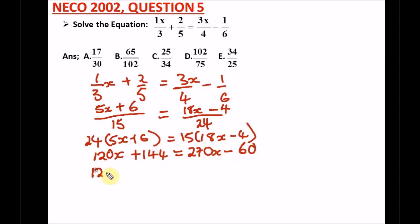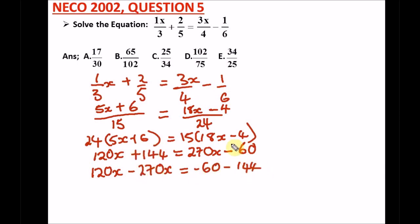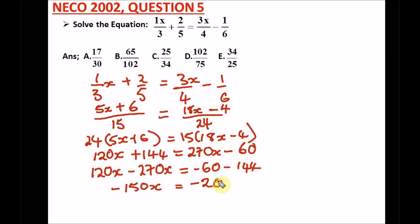Collecting like terms: the x terms come to the left and 144 goes to the right side. We have 120x minus 270x equal to minus 60 minus 144. Remember when a positive term crosses to the other side it becomes negative. So 120 minus 270x gives us minus 150x, equal to minus 60 minus 144, which gives minus 204.